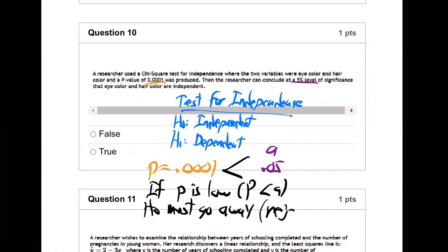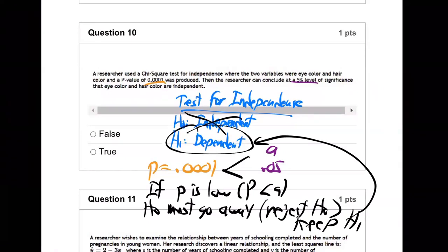H0 must go away. Meaning reject H0, keep H1, right? Reject H0, so bye-bye H0, keep H1. So we conclude they're dependent.